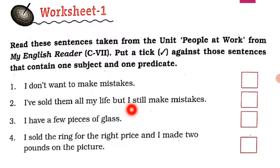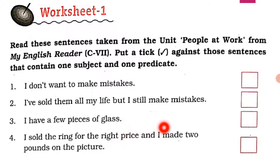Let's read: 'I don't want to make mistakes.' 'I have sold them all my life but I still make mistakes.' 'I have a few pieces of glass.' 'I sold the ring for the right price and I made two pounds on the picture.'